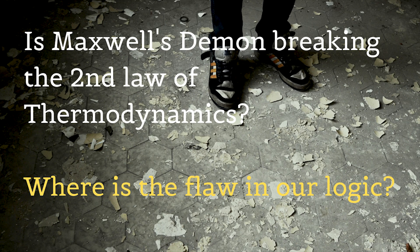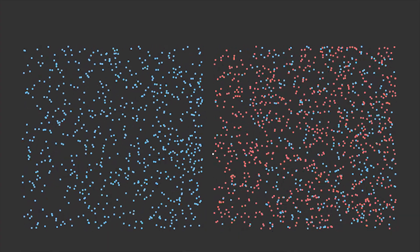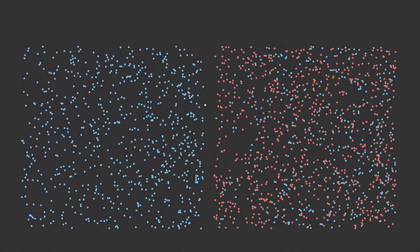Didn't we just say entropy cannot be reversed? What happened? That's Maxwell's Demon — the Maxwell's Demon that subverts natural law and breaks the second law of thermodynamics. So what is going on? We need to look at entropy again. What is entropy?